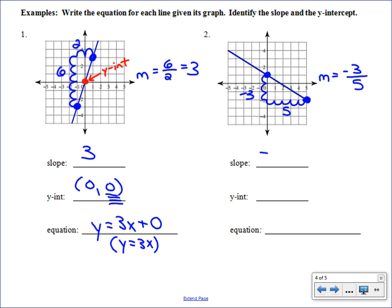So our m is negative 3 fifths. Our y-intercept, we actually marked as one of our nice points. And the y-intercept was located at 0, 1. And again, we're really only looking at that second number. And we want to fill in the m and fill in the b to write our equation. So y equals negative 3 fifths x plus 1.